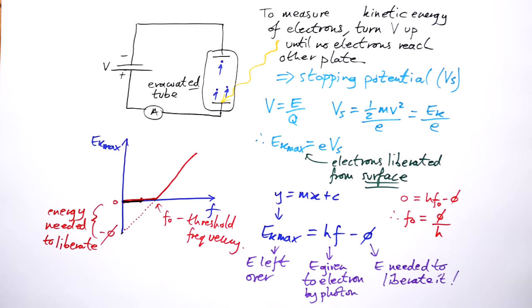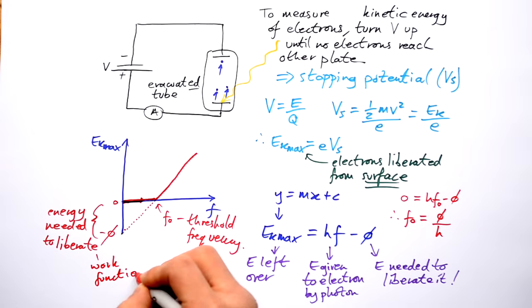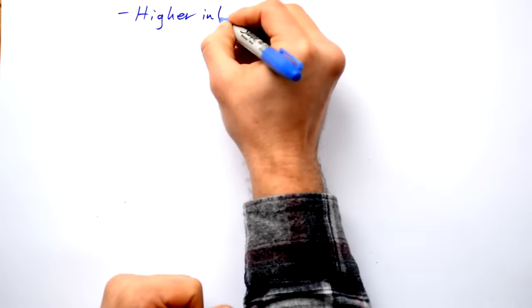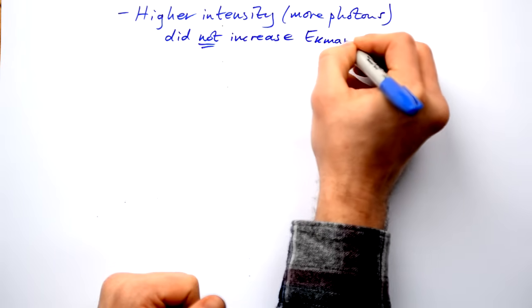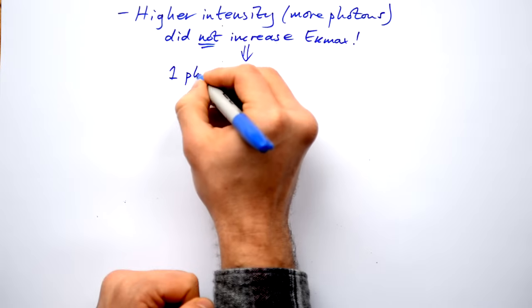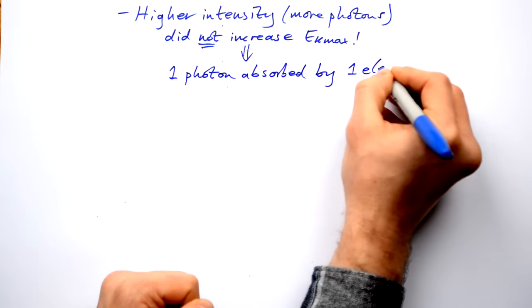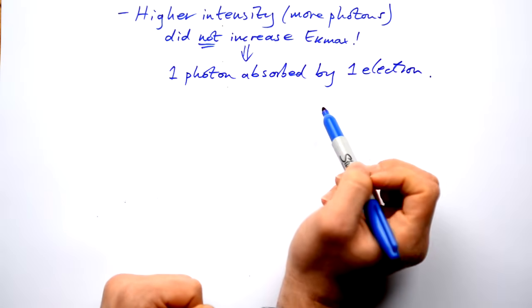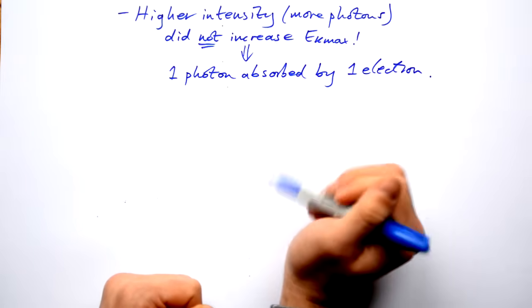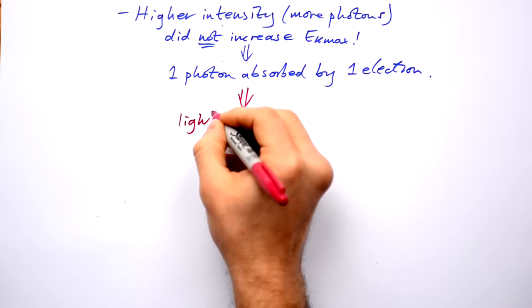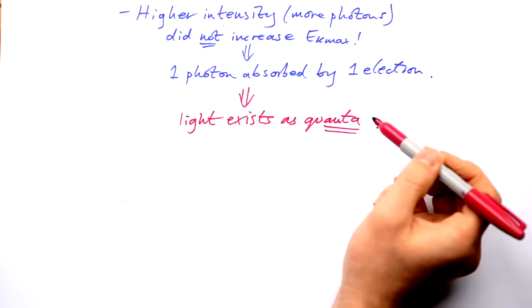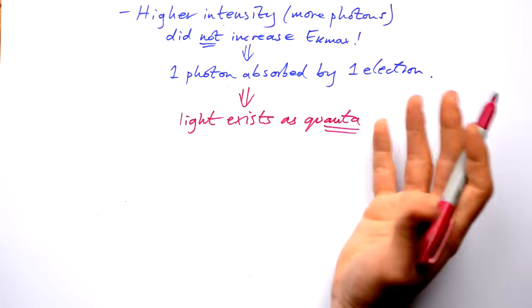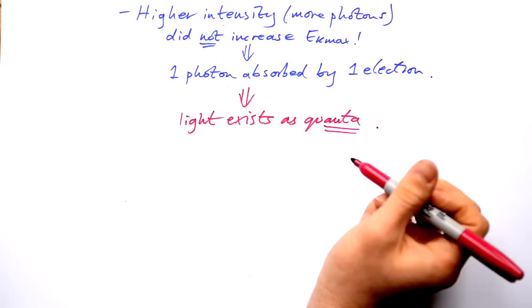φ — the energy needed to liberate an electron — is called the work function of a metal, and it's different for every type of metal. The photoelectric effect proved that higher intensity (more photons) does not increase the kinetic energy of electrons, which means one photon is absorbed by one electron. This also proves that light exists as quanta — specific individual bits of energy known as photons, not one big continuous wave.